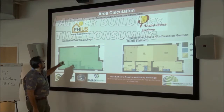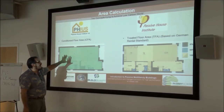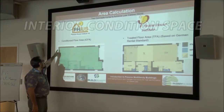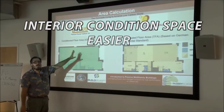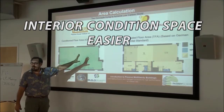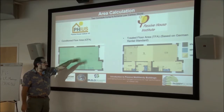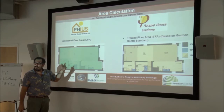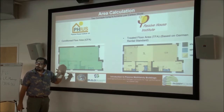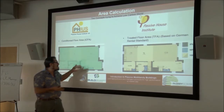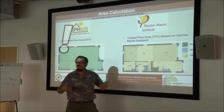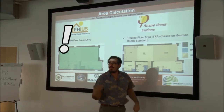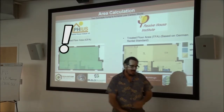In the FIA standard, it's a similar standard but they're taking interior conditioned space, so it's a much easier calculation for people to make. It's just the total interior from the inside of the thermal envelope — that total interior conditioned area. It doesn't really matter whether you use this one or that one, as long as you know which one the software takes and you put that in.